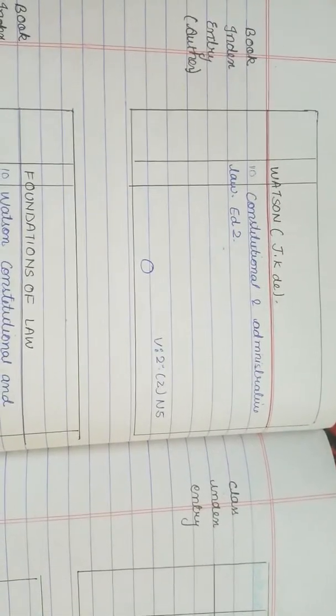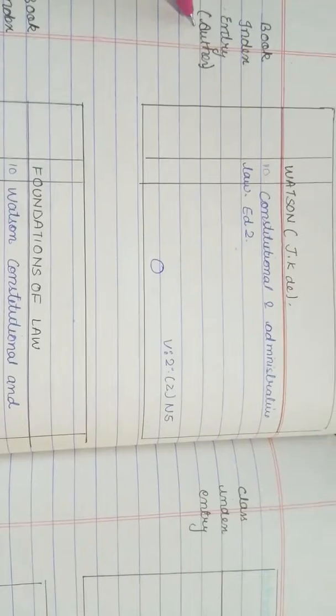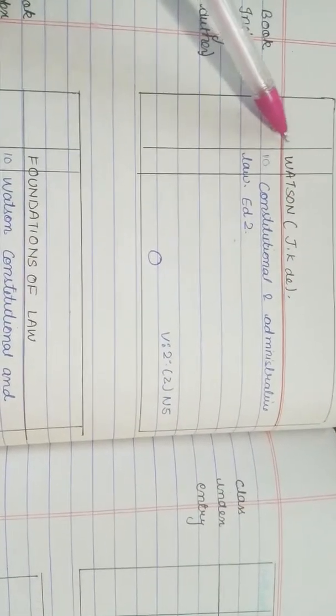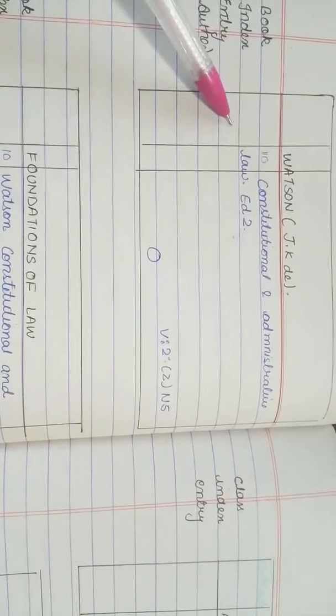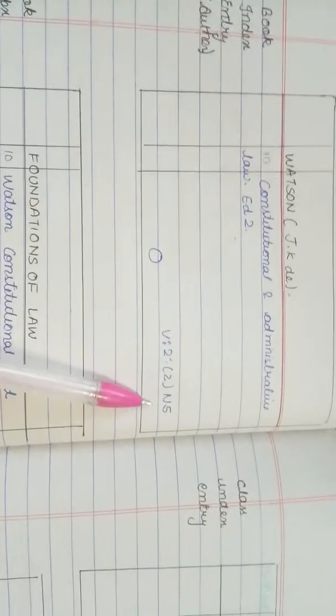And next we have book index entry of author. Author Watson J.K.D. has written 'Constitutional and Administrative Law', second edition, and this is our call number.